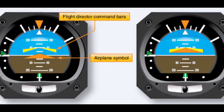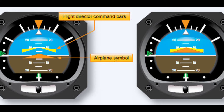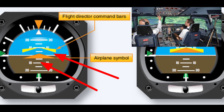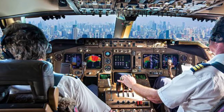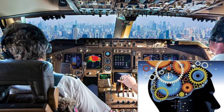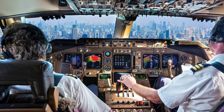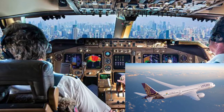A flight director system is an instrument system consisting of electronic components that compute and indicate the aircraft attitude required to attain and maintain a pre-selected flight condition. A command bar on the aircraft's attitude indicator shows the pilot how much and in what direction the attitude of the aircraft must be changed to achieve the desired result. The computed command indications relieve the pilot of many of the mental calculations required for instrument flight, such as an interception angle, wind drift correction, and rate of climb and descent.